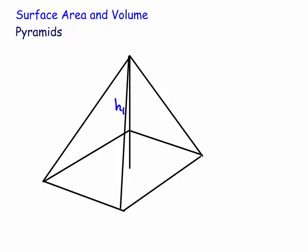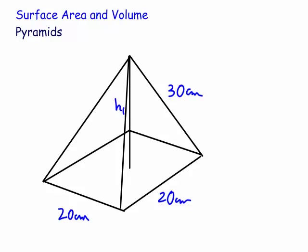The base doesn't have to be square — it could be rectangular, triangular, or any shape. We're going to assume this one is a square pyramid. Let's put some measurements in: 20 centimeters by 20 centimeters, so it's a square-based pyramid with a 20-centimeter edge. Now there are a lot of little problems that occur with pyramids — you're not usually given the right measurement. We're going to put a slant height of 30 centimeters in here.